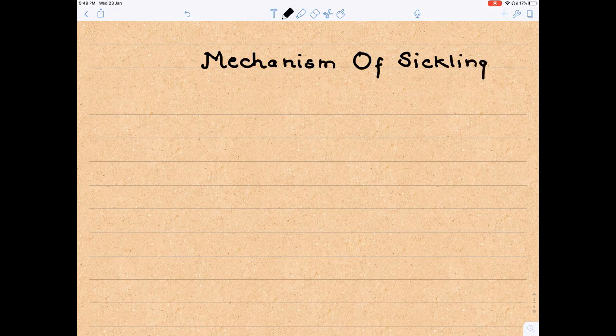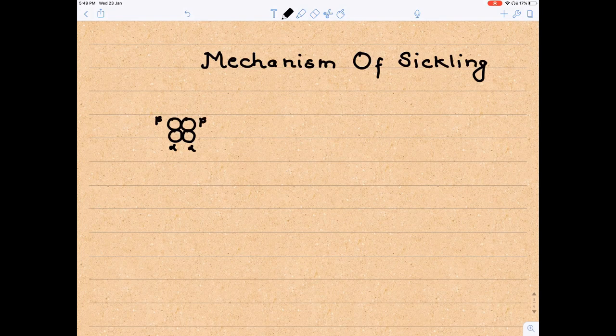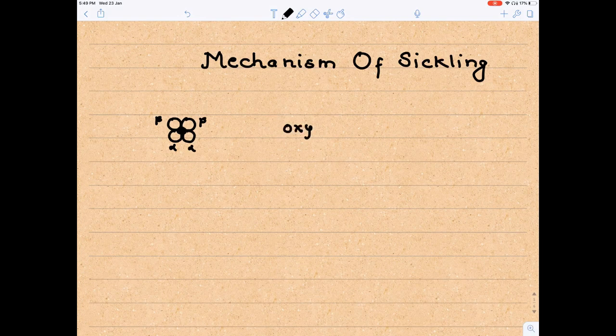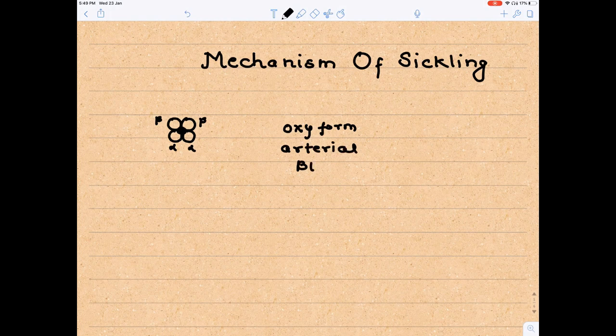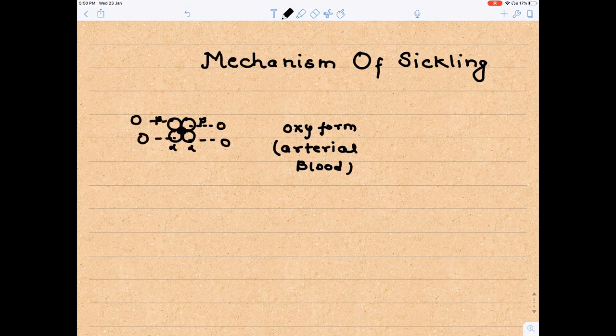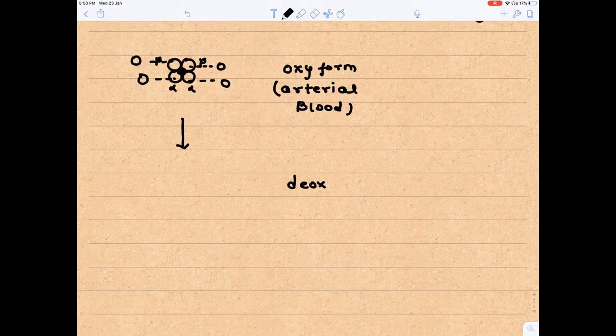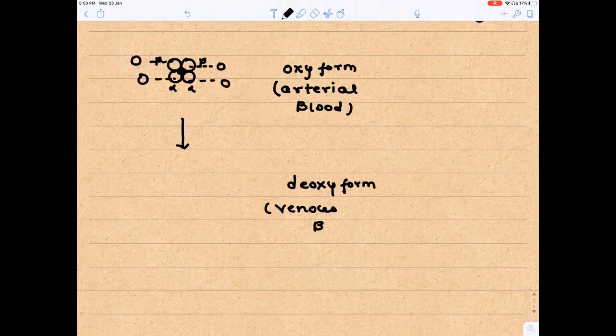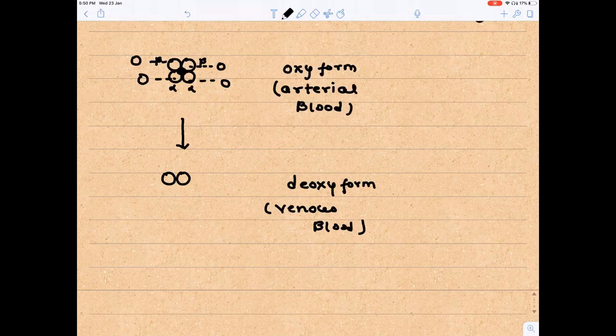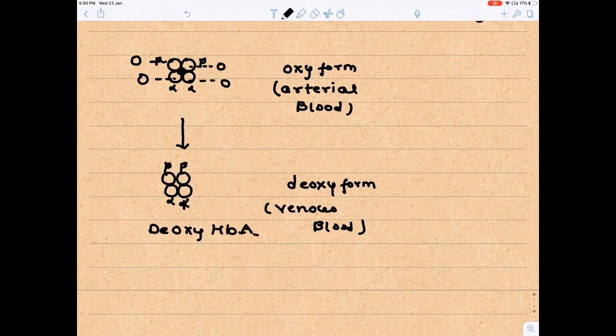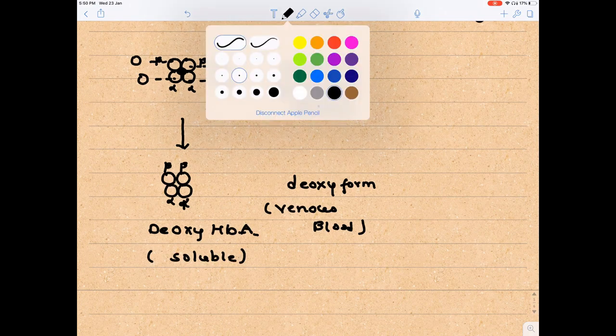Let's make notes on mechanism of sickling. Hemoglobin A is a tetramer consisting of 2 alpha and 2 beta chains. In oxy form which occurs in arterial blood, they will accept 4 molecules of oxygen and will be converted into oxy hemoglobin A. In deoxy form which occurs in venous blood, they will release all these 4 molecules. So now only 2 alpha and 2 beta remain. There is no oxygen. This is deoxy form of hemoglobin A, and good news is that it is soluble into the cytoplasm.